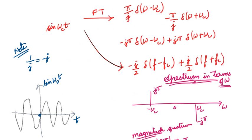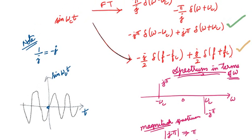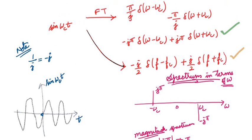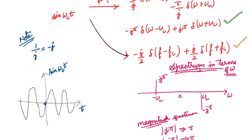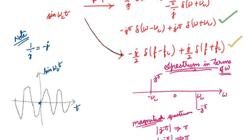I have written both results. The Fourier transform of sin(ωct) in terms of ω is jπ·[δ(ω + ωc) − δ(ω − ωc)], and in terms of f it is (j/2)·[δ(f + fc) − δ(f − fc)]. The sine signal in the time domain and its frequency domain spectrum are now established.